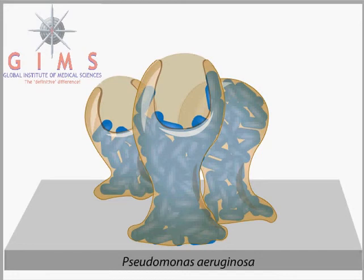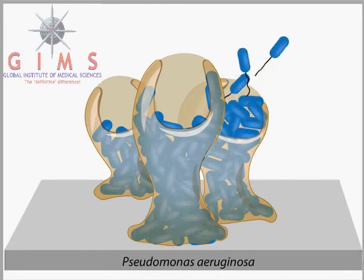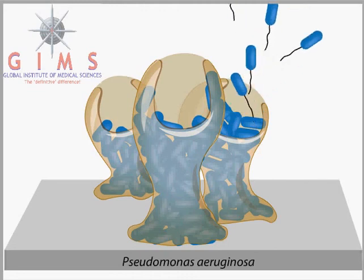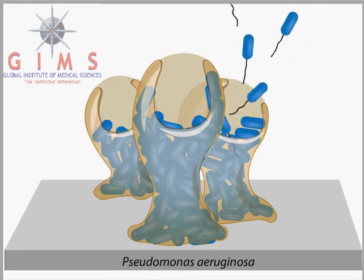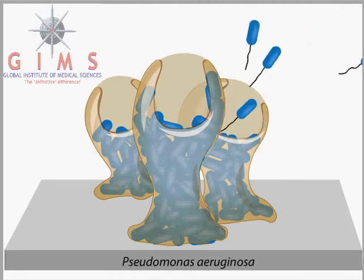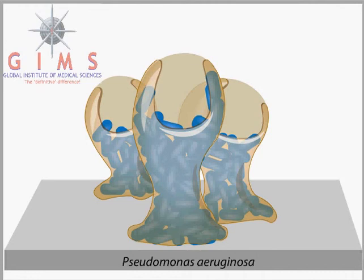Pseudomonas aeruginosa can be medically devastating. It forms biofilms in susceptible individuals, such as in the lungs of patients with cystic fibrosis, and on medical implants.